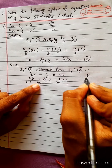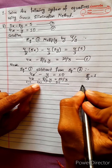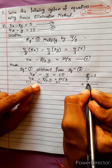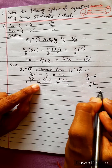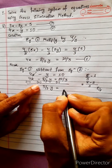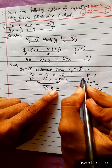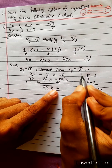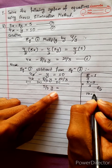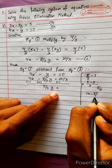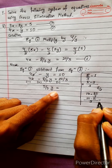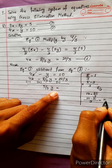Taking the LCM: 8/3 minus 1 gives 8 minus 3 over 3, which is 5/3. So 5/3 y equals 10 minus 20/3. That is 30 minus 20 over 3, which equals 10/3.